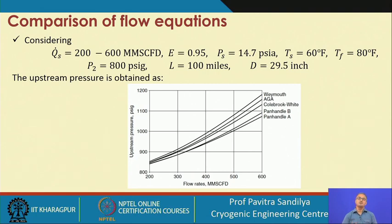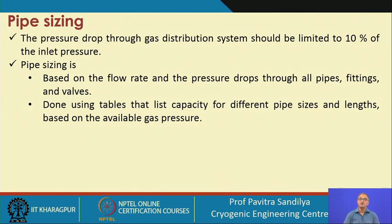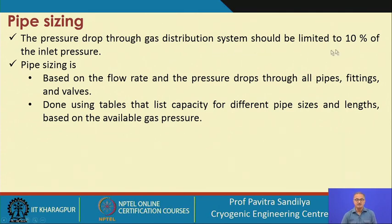Generally, we may use the Weymouth equation for compressor selection. After knowing the pressure drops, we proceed to pipe sizing — deciding what diameter of pipeline to choose for a given length. The pressure drop in the district gas distribution system should be limited to about 10% of the inlet pressure. This is the thumb rule we follow to design the pipe size.